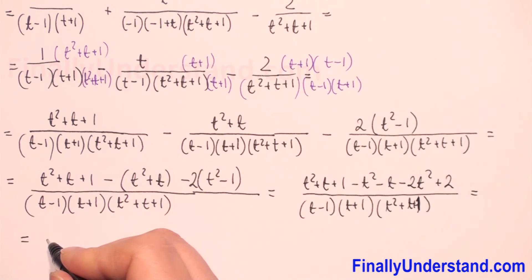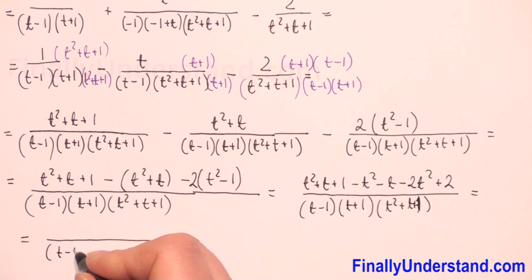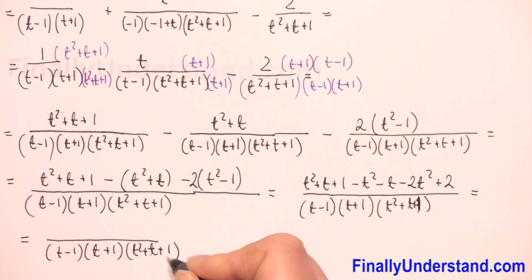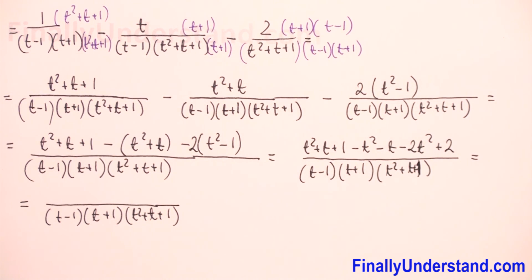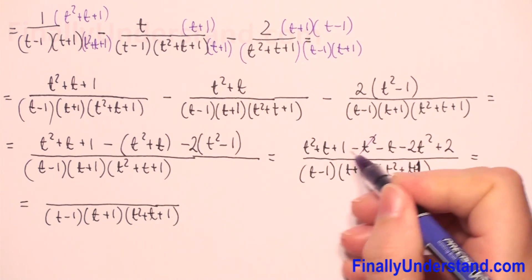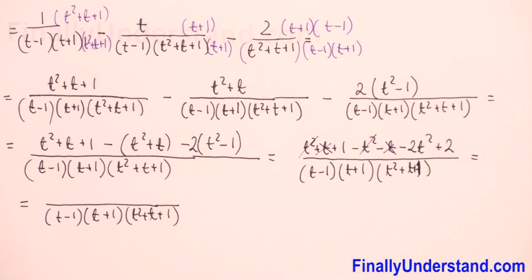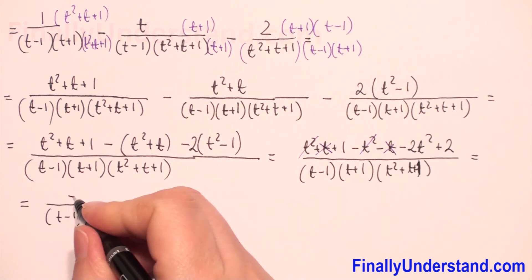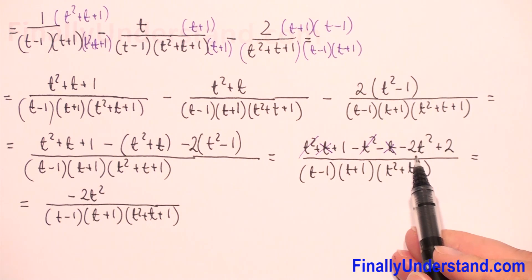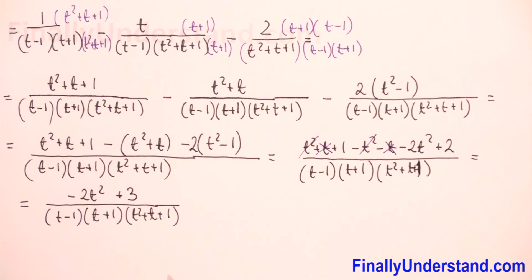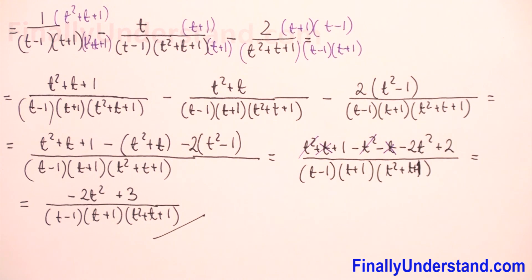Now we combine like terms. We see that t squared and negative t squared cancel, and t and negative t cancel. We have negative two t squared and one plus two equals three. So the final answer is three over the common denominator. We cannot factorize anything further in the numerator, so we cannot reduce. This is the solution.